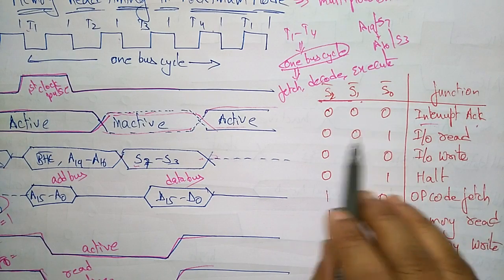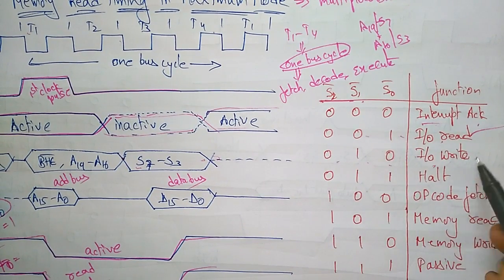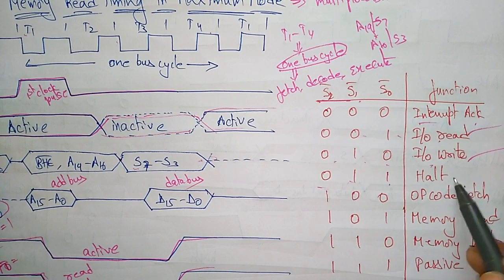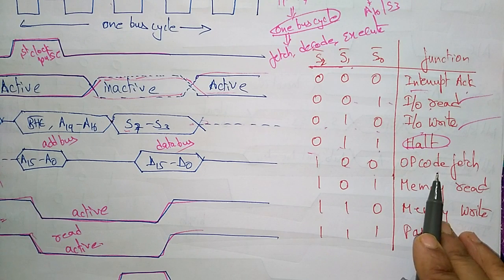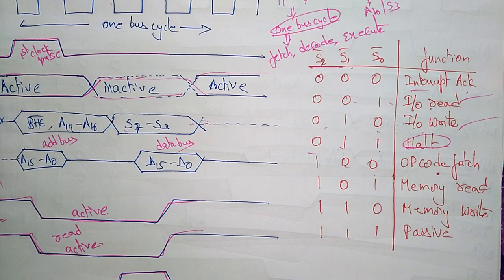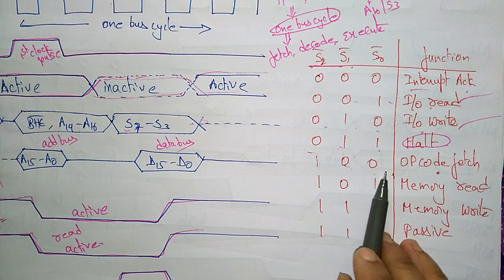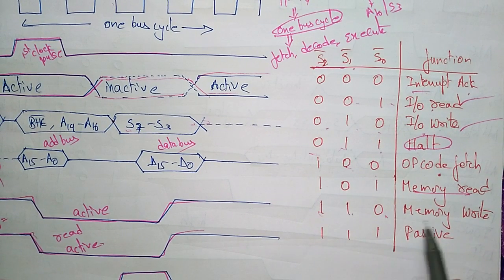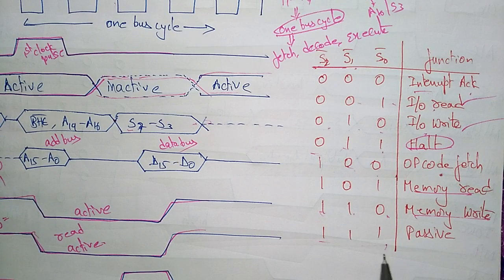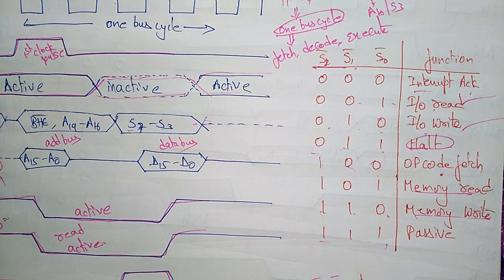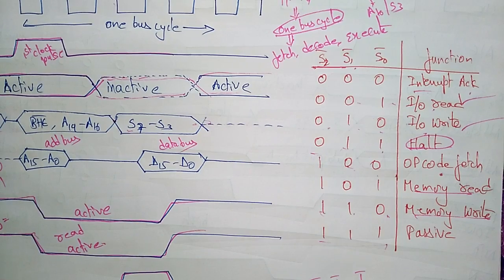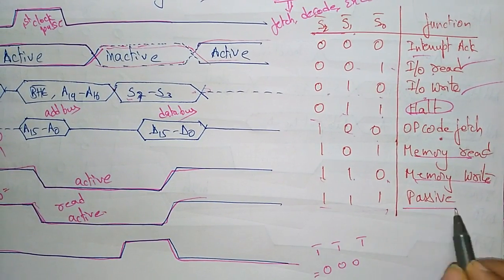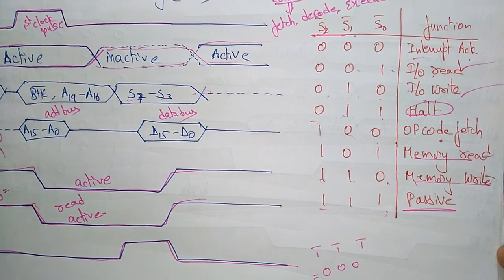Status signal combinations: 0,0,1 means I/O read operation; 0,1,0 means I/O write; when both are present, the hold condition occurs. 1,0,0 means opcode fetch — the opcode has to be fetched first. 1,0,1 means memory read operation; 1,1,0 means memory write. If all ones (one bar, one bar, one bar means everything becomes zero), the processor is in the passive state and should not be working.